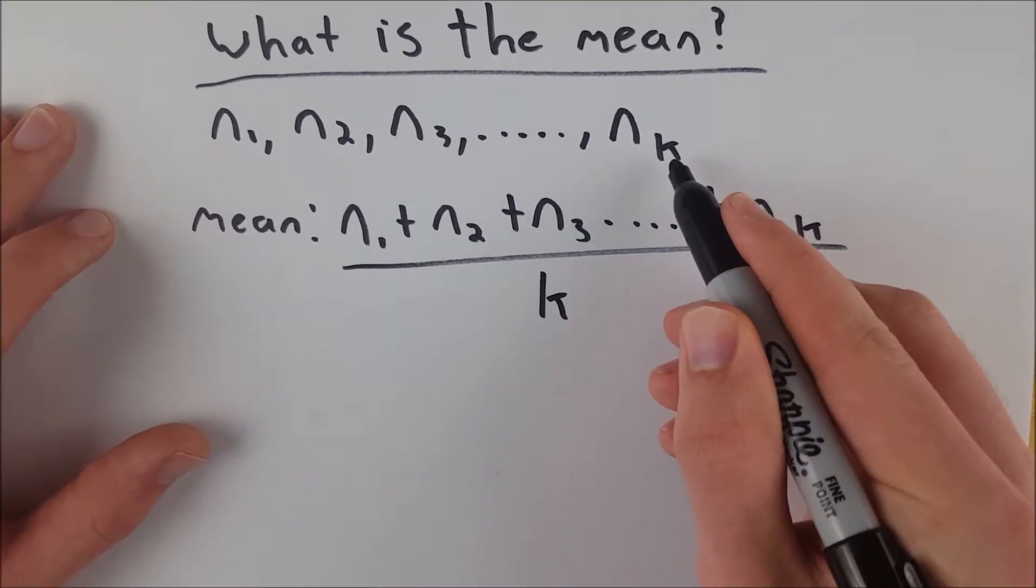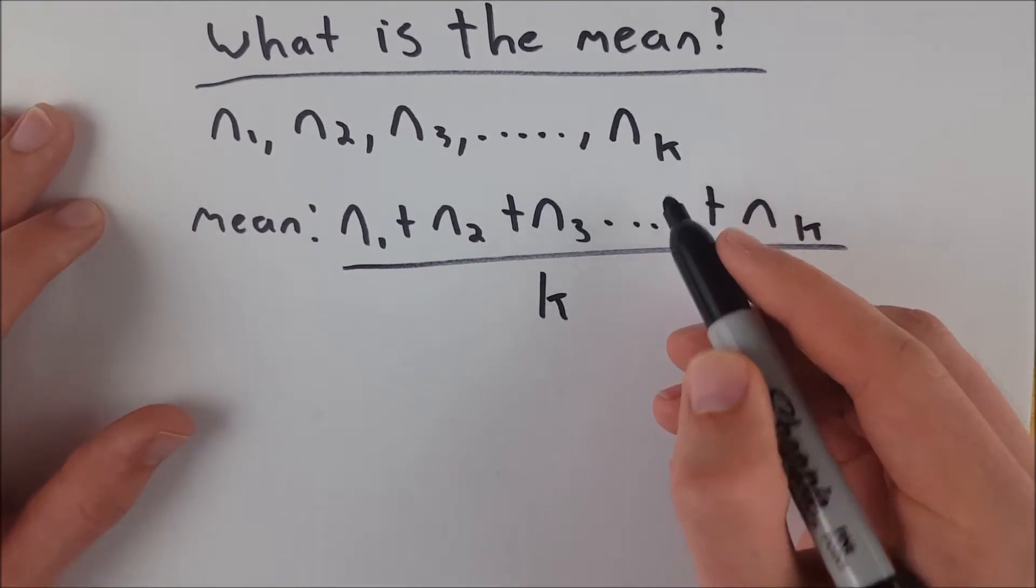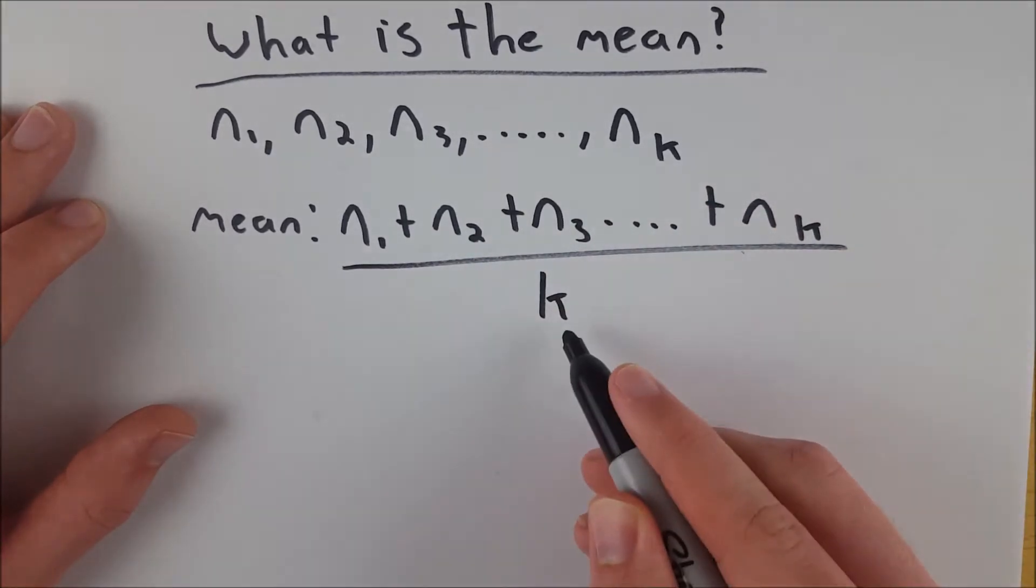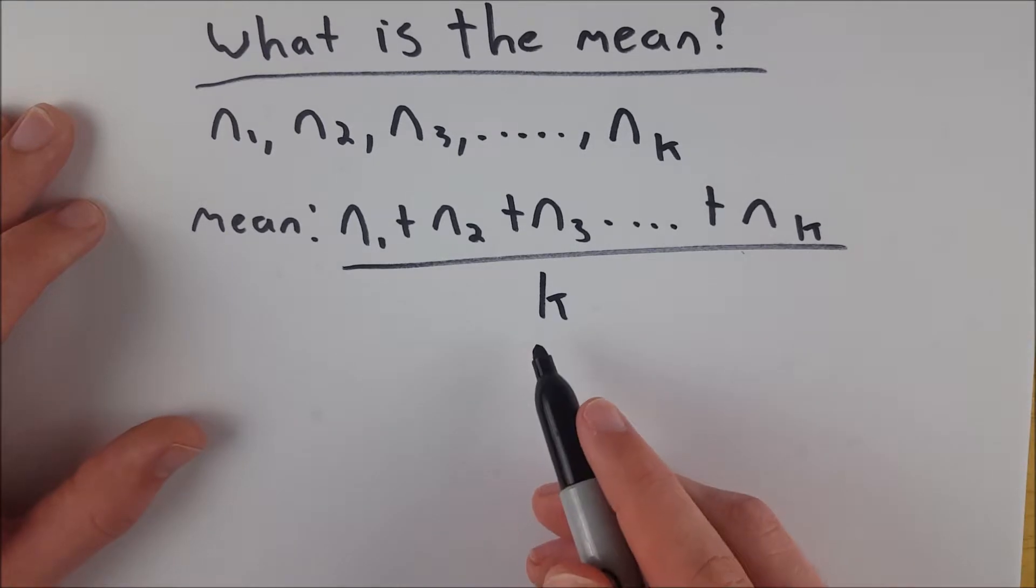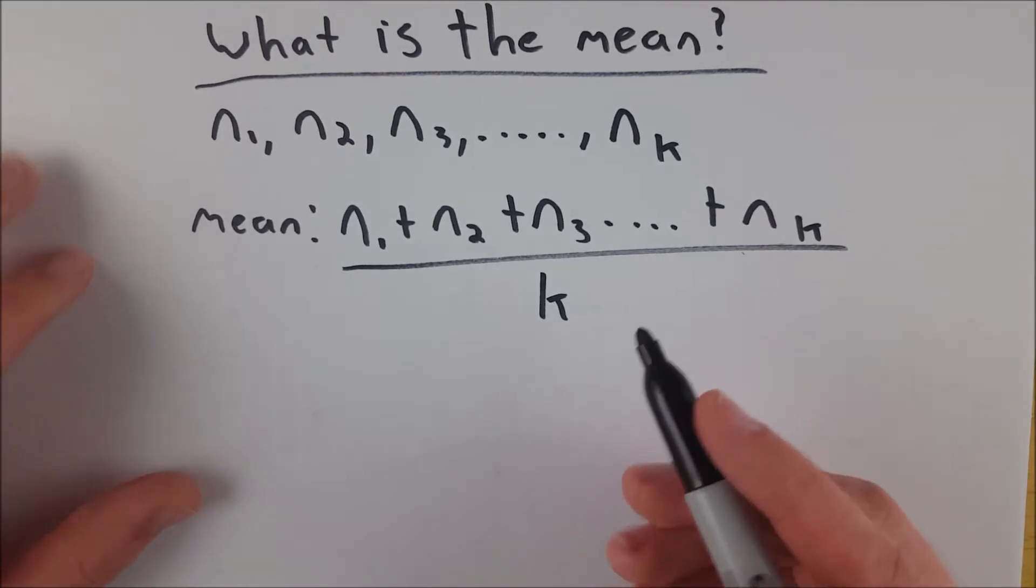And we can see, let's say this was n sub 10, that would mean you've got 10 data points, that's your k value. So you are adding up all your data points divided by the total number of data points. So if we look at a quick example,